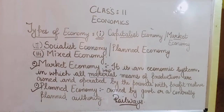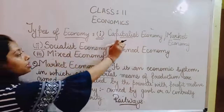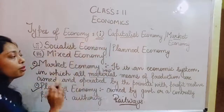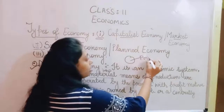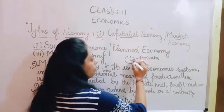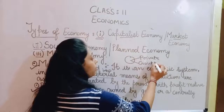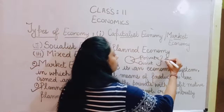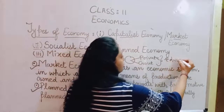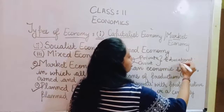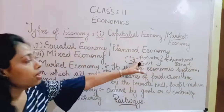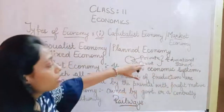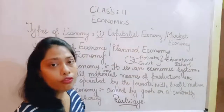Now the third is a mixed economy. By the name it is clear that it is a mixture of the capitalist economy and the socialist economy. Here, if there is any business, part of it is governed by the private sector and the other part is governed by the government — both have a share. An example is educational institutions: there are schools governed by private institutions and there are also schools governed by the government, so it is a mixture of both.